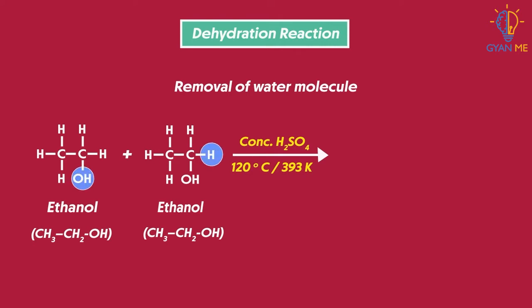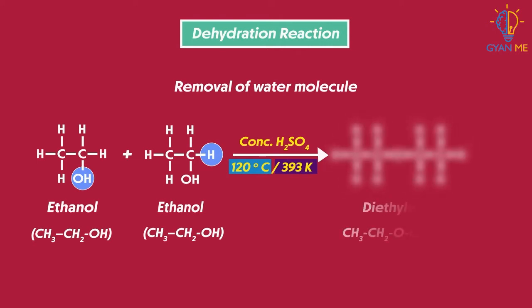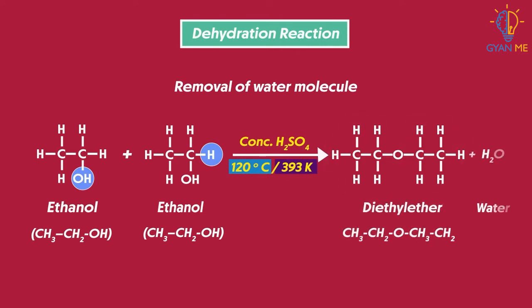Ethanol dehydrates and gives two different products at two different temperatures. If the mixture is heated up to 120 degrees Celsius or 393 Kelvin, then it will form diethyl ether and one molecule of water.